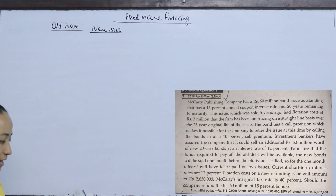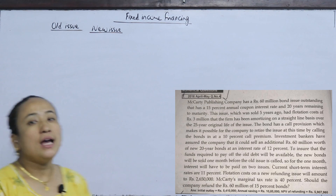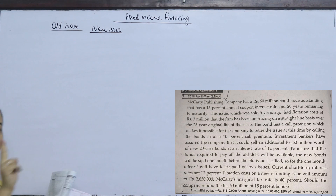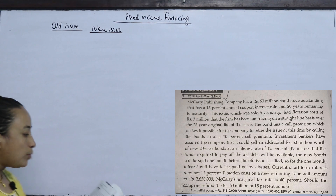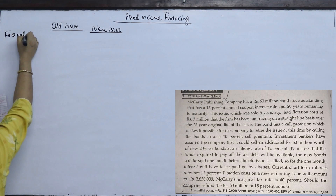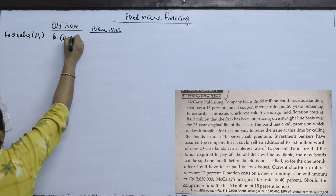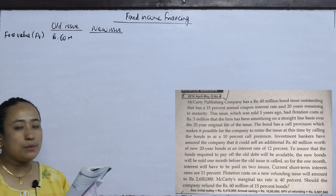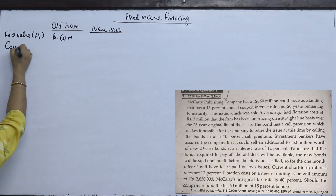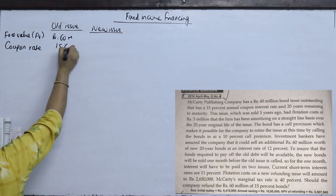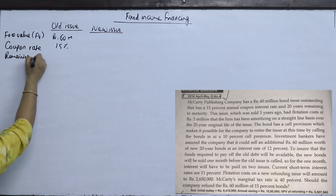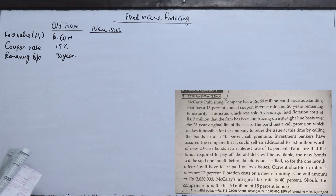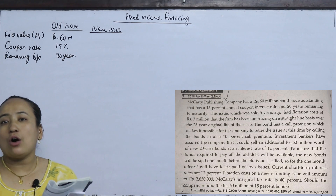MC Carty Publishing Company has $60 million issue outstanding. The company's face value is $60 million. It has a 15% annual coupon interest rate. The remaining life is 20 years. This issue was sold 5 years ago.